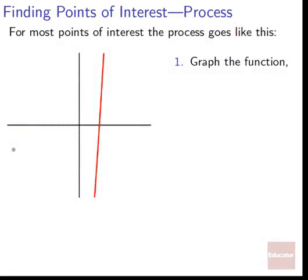So how do we actually find a point of interest with a graphing calculator? For most points of interest, the process is going to go like this. You start off by graphing the function. In this specific case, I actually graphed a parabola, and I knew that because I knew I had x squared at the front of it and then some other stuff. But when I graphed it, I see that I get this on my graphing calculator screen.